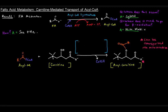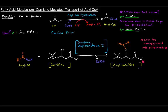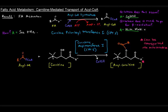This process of attaching the acyl group to carnitine — with coenzyme A falling off — is catalyzed by an enzyme called carnitine acyl transferase 1, or CAT1. It can also be called carnitine palmitoyltransferase 1, or CPT1. The term 'acyl transferase' is preferable because this can be any acyl-CoA, whereas 'palmitoyltransferase' refers specifically to a 16-carbon saturated fatty acyl-CoA.